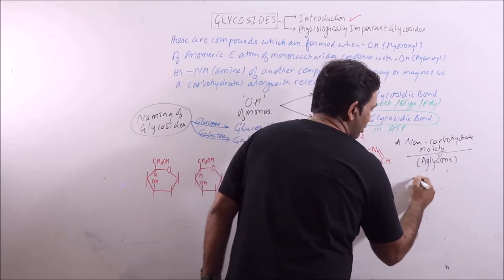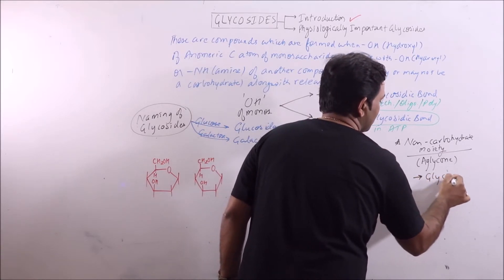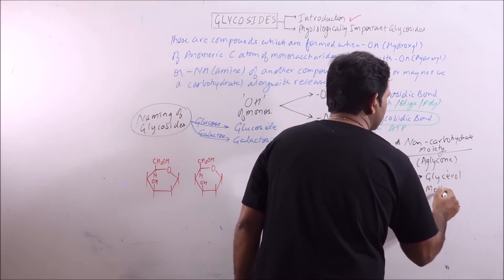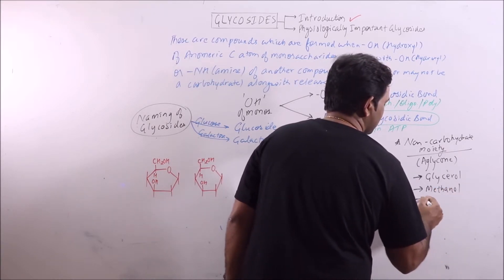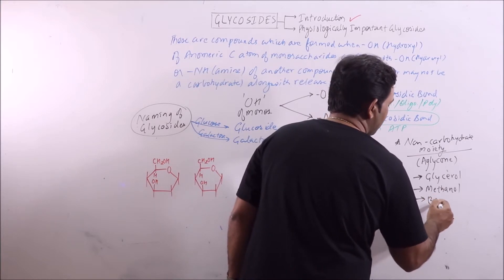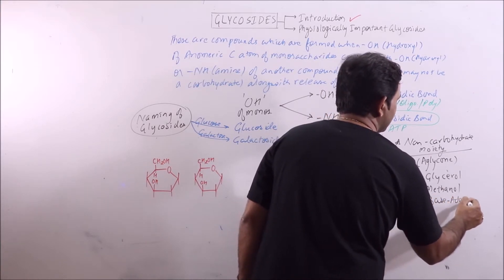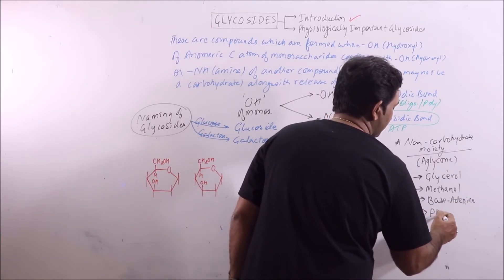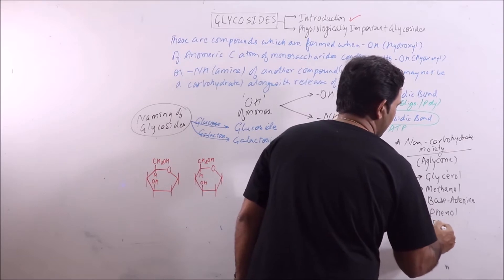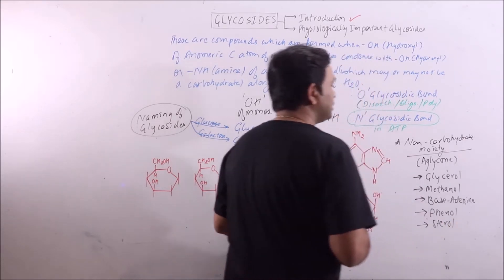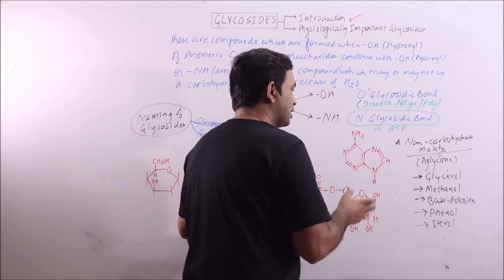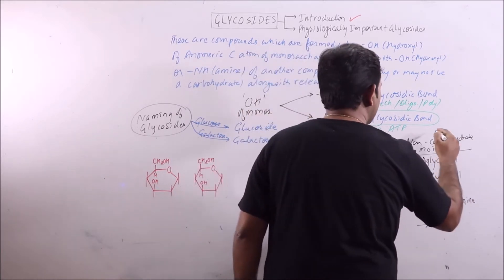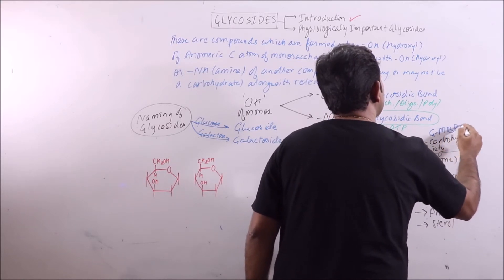Aglycone may include glycerol, methanol, a base like adenine, phenol, and sterol. These are the common non-carbohydrate moieties referred to as aglycone. We can learn them by the mnemonic G-NBPS.